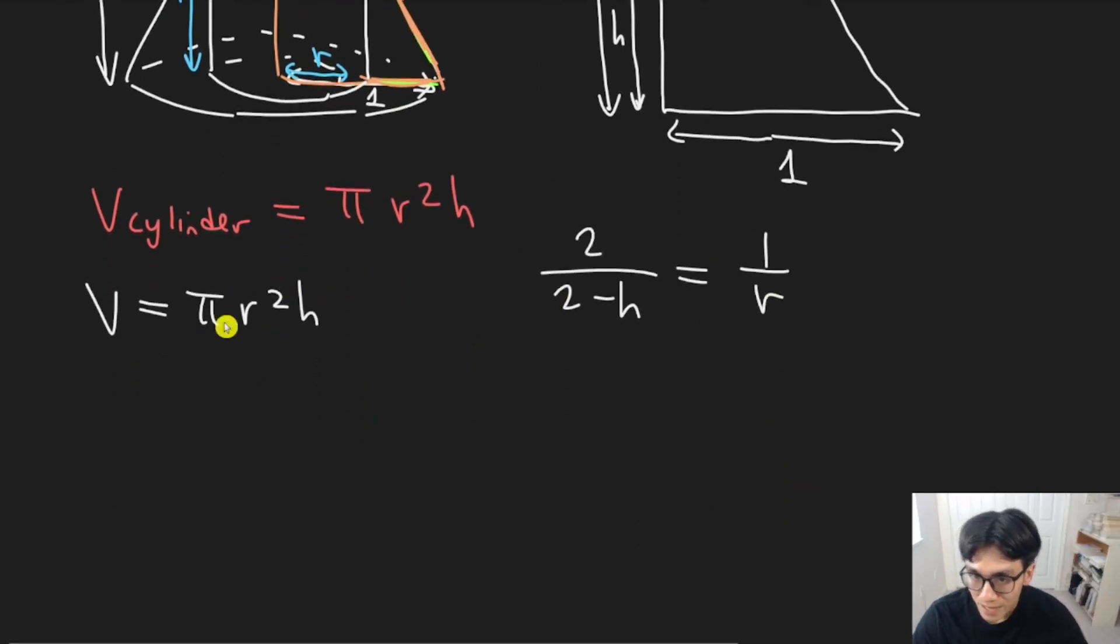Now, again, remember our goal here is isolate or eliminate one of the two variables. We can actually solve for r or solve for h. I'm going to solve for h because then we won't have to square the result. If I solve for r, we're going to have to square it, which makes the math a bit more complicated. Although if you can do the algebra, that's no problem. So here we're going to cross multiply. So I have two times r is the same as one times two minus h.